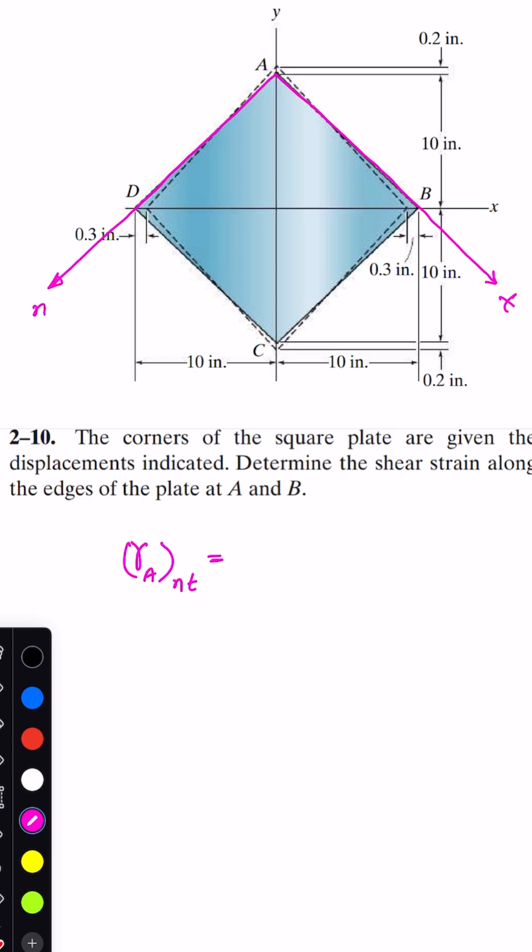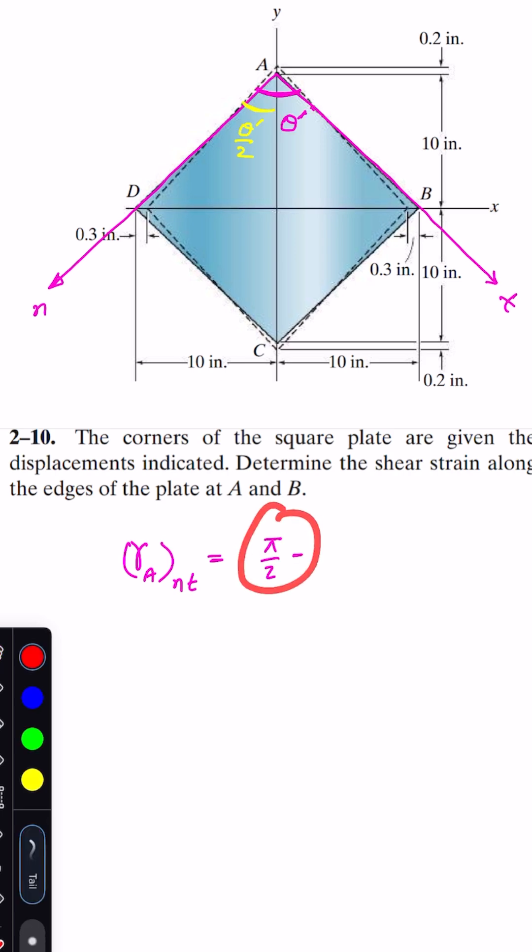As we know that change will be the initial angle pi divided by 2 minus theta dash, which will give us the shear strain. This will give us the shear strain at point A along the normal n tangential axis.